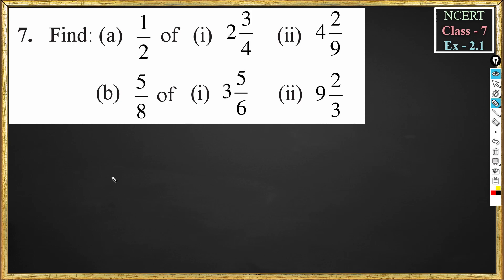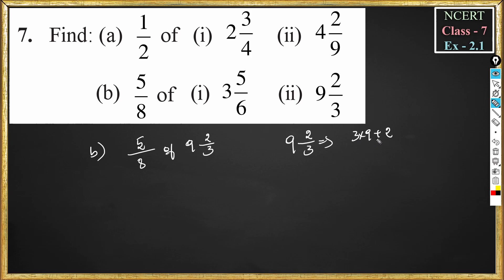Now problem number B, second question: 5 by 8 of 9 and 2 by 3. So 9 and 2 by 3 can be written as 3 into 9 plus 2, divided by 3. So 3 nines are 27, plus 2, divided by 3, which equals 29 by 3.